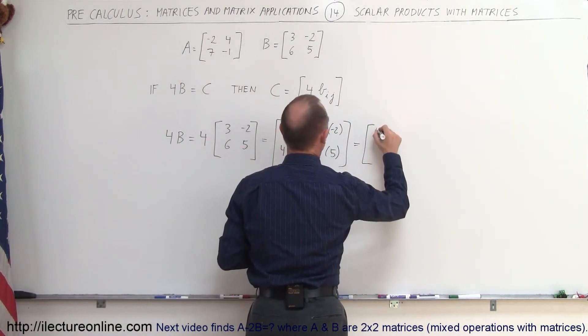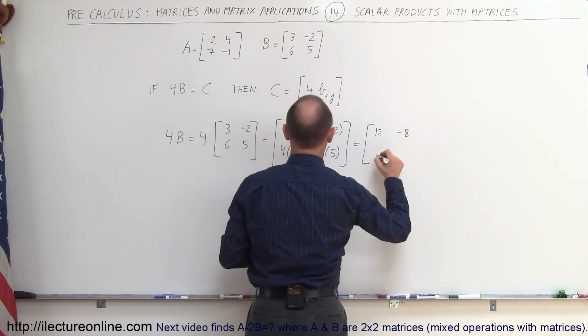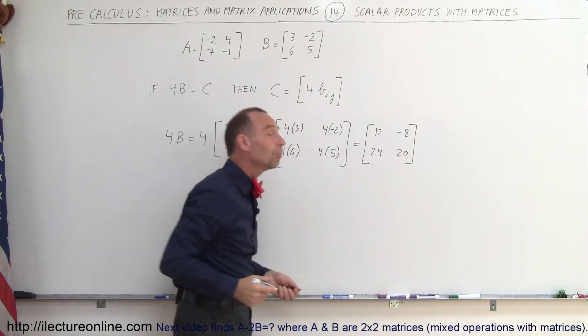So this is equal to 12, negative 8, 24, and 20. And that's as simple as it is.